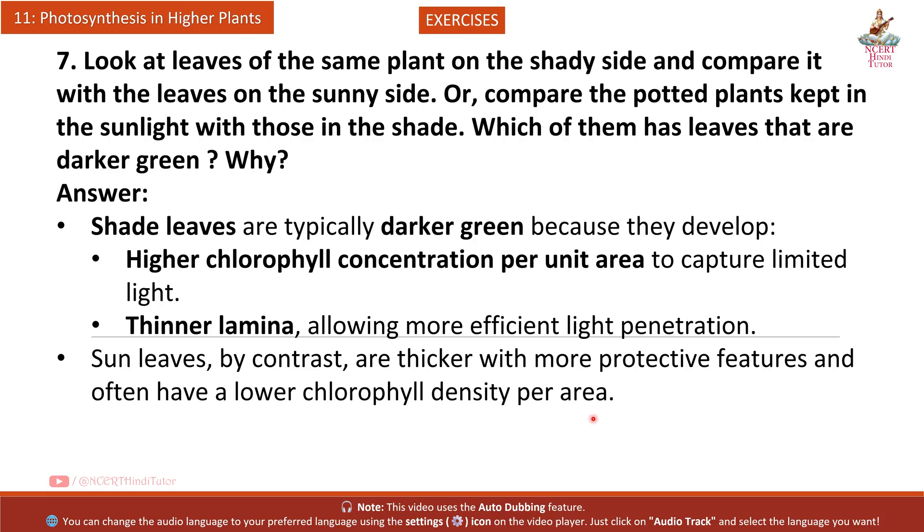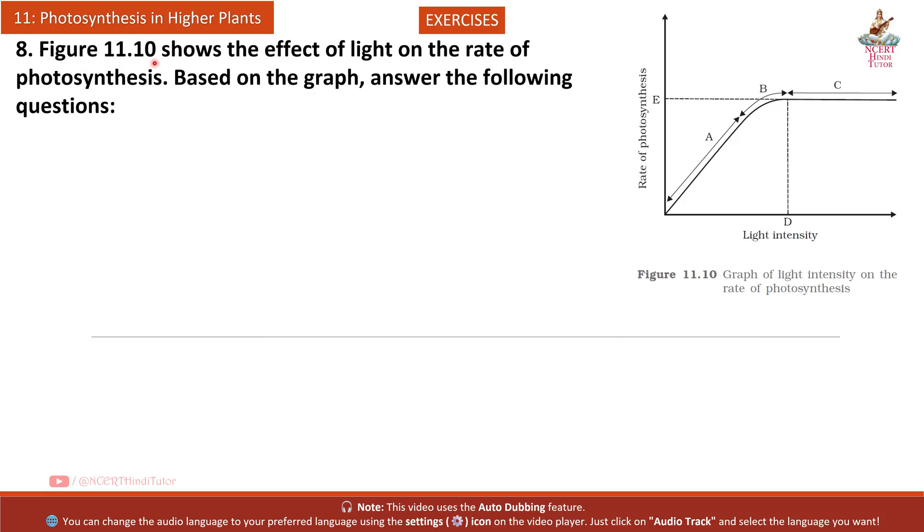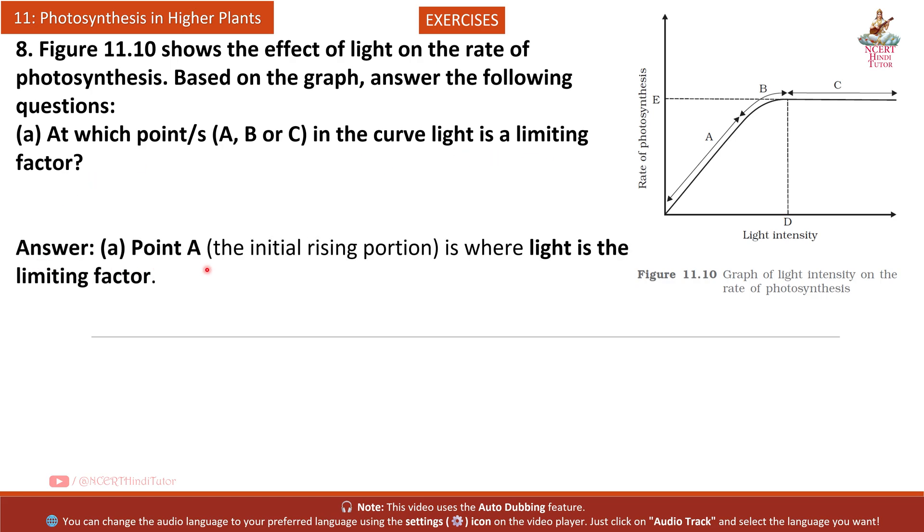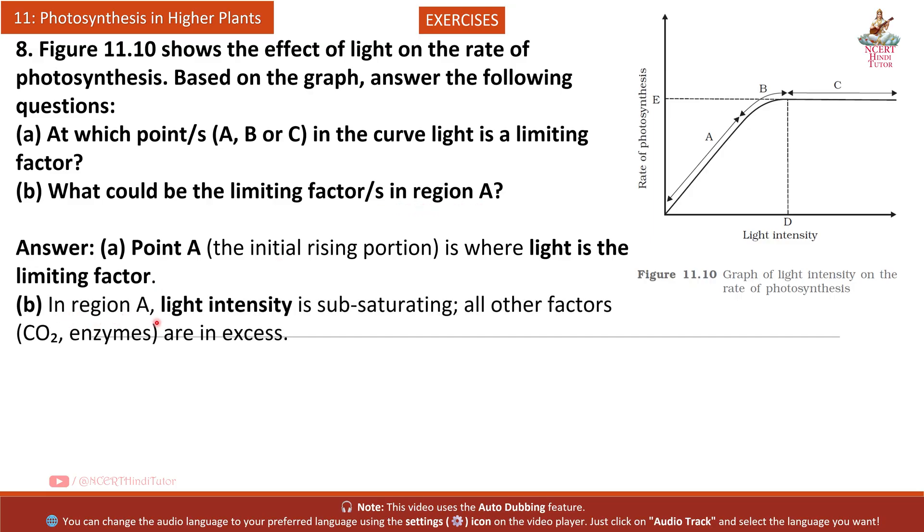Answer: Shade leaves are typically darker green because they develop higher chlorophyll concentration per unit area to capture limited light, and a thinner lamina allowing more efficient light penetration. Sun leaves by contrast are thicker with more protective features and often have lower chlorophyll density per area. Question 8: Figure 11.10 shows the effect of light on the rate of photosynthesis. Based on the graph, answer: At which point A, B or C in the curve is light a limiting factor? Answer: Point A, the initial rising portion, is where light is the limiting factor.